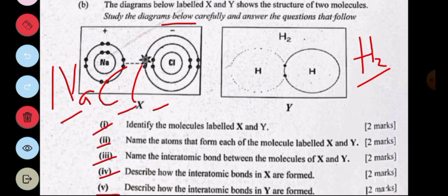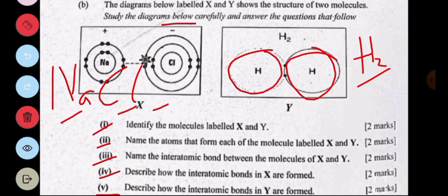Part v: describe how the interatomic bonds in Y are formed. Covalent bonds are formed when there is sharing of electrons. Each hydrogen atom had one electron, so the two electrons are brought closer together to form a stable electron configuration. The two electrons are shared, so both hydrogen atoms now have two electrons on the outer shell.